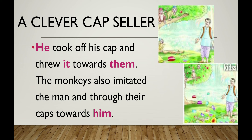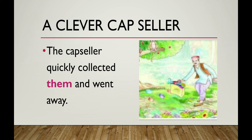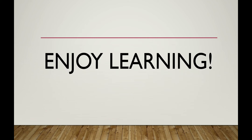Imitated means doing the same action. The cap seller threw towards them, so the monkeys threw back towards him. In the last blank we use 'him.' The cap seller quickly collected all the caps — we use 'them' for the plural caps — and went away. He was a very smart cap seller, and that is why he was able to get his caps back. Be smart and wise while doing your work. I hope you have enjoyed your learning. Good luck!